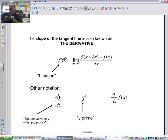The slope of the tangent line is also known as the derivative. F prime of x, that's how we say it, that's how we write it. F prime is another way to write the derivative. It's shorthand. It's the limit as delta x approaches 0 of the f of x plus delta x minus the f of x all over delta x. Other notation that we use, we use dy dx fairly regularly. The derivative of y with respect to x, that's how we would pronounce that.